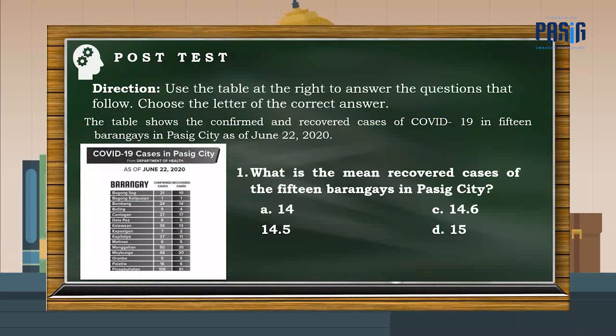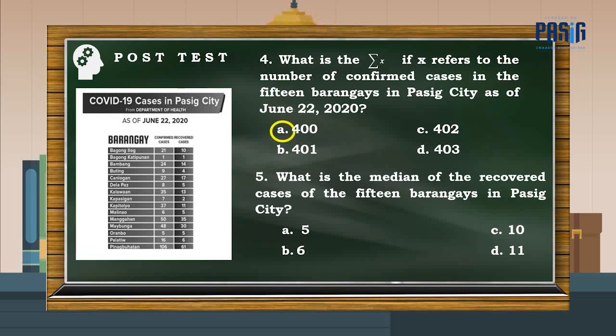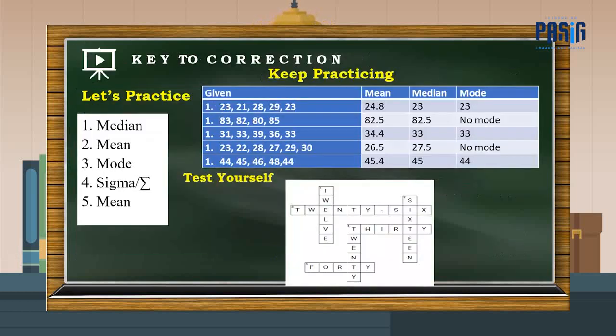Let us answer the post-test. Use the table at the right to answer the questions that follow. Choose the letter of the correct answer. The table shows the confirmed and recovered cases of COVID-19 in 15 barangays in Pasig City as of June 22, 2020. Keep corrections are given to you. Just check your answer and be honest.